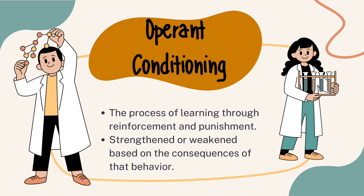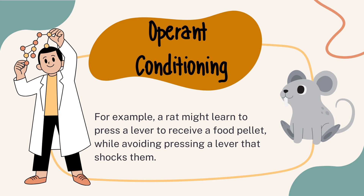Operant conditioning, on the other hand, is a type of learning in which an organism learns to associate a behavior with a consequence. Behaviors followed by positive consequences, such as rewards, are more likely to be repeated, while behaviors followed by negative consequences, such as punishment, are less likely to be repeated. For example, a rat might learn to press a lever to receive a food pellet while avoiding pressing a lever that shocks them.